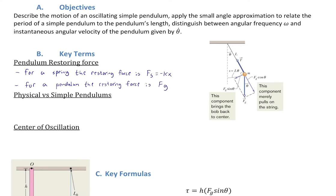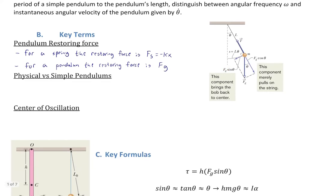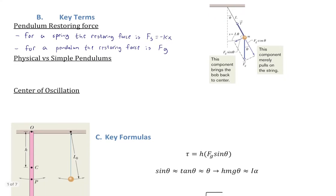A stable equilibrium exists at the bottom of the swing for a pendulum. Recall that the other premise — the definition of the simple harmonic oscillator — was that the restoring force had to be linear, in other words directly proportional to displacement.